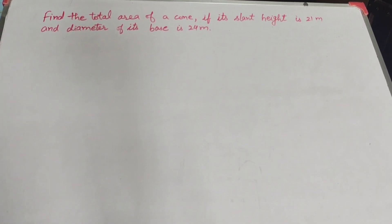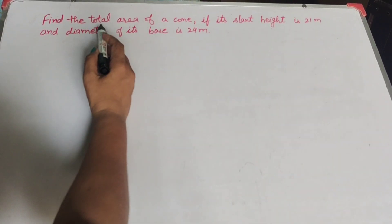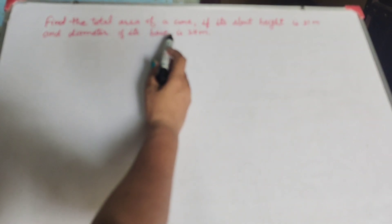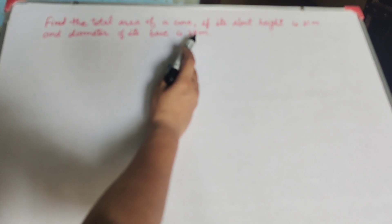Hello friends, welcome to my channel. In this video we discuss finding the total area of a cone if its slant height is 21 meters and diameter of its base is 24 meters.